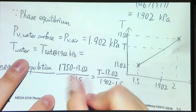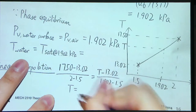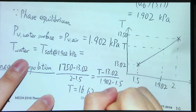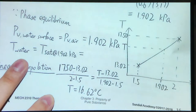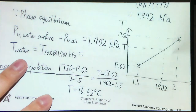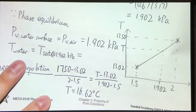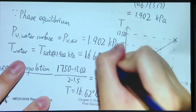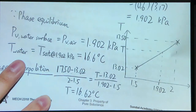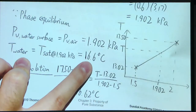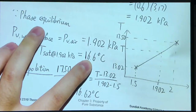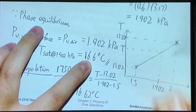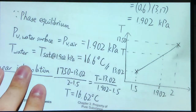T will be equal to 16.62 degrees C. That's our approximation. Correcting to three significant figures, we get 16.6 degrees C. So we have finished this problem.